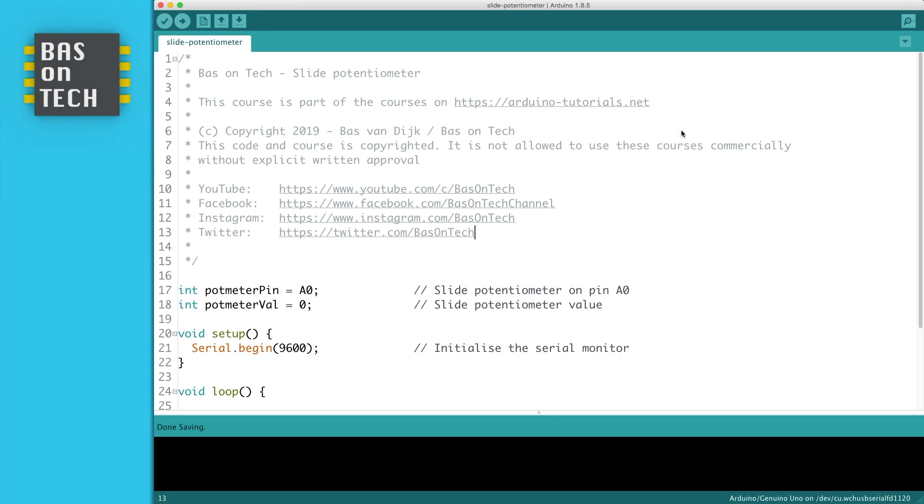Let's have a look at the code. On line 17 and 18 I've defined two variables: one for the potentiometer pin which is analog 0, and one for the potentiometer value which we set to 0.